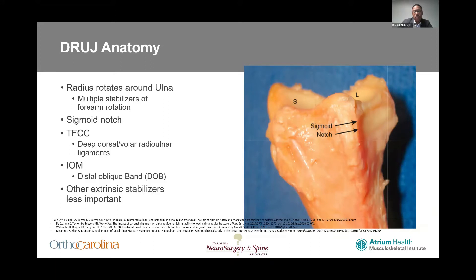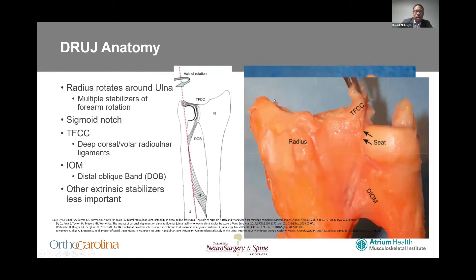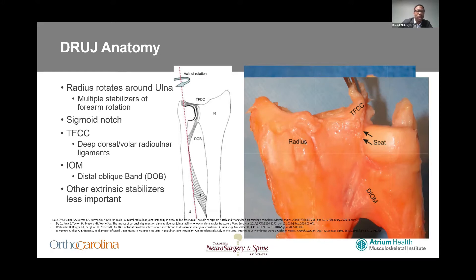There are a lot of soft tissue stabilizers to help allow for forearm rotation. The TFCC, specifically the deep radial ulnar ligaments, dorsal and volar, help with stability. For today, I want everybody to think about the distal oblique band of the interosseous membrane, which inserts right at the proximal most point of the sigmoid notch. There are other extrinsic stabilizers, but they'll be less important for our discussions today.